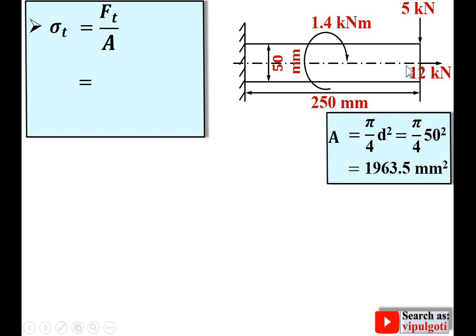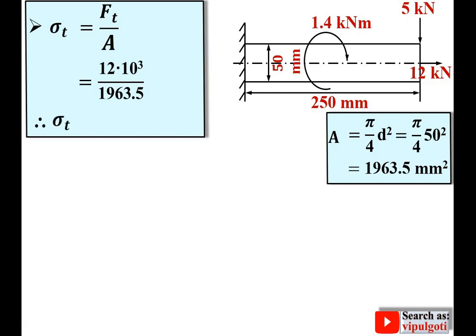Now I can calculate tensile stress: FT = 12 kN, which must be converted to Newtons by multiplying by 10³. Dividing by the area of 1963.5 mm², we get tensile stress σT = 6.11 N/mm².